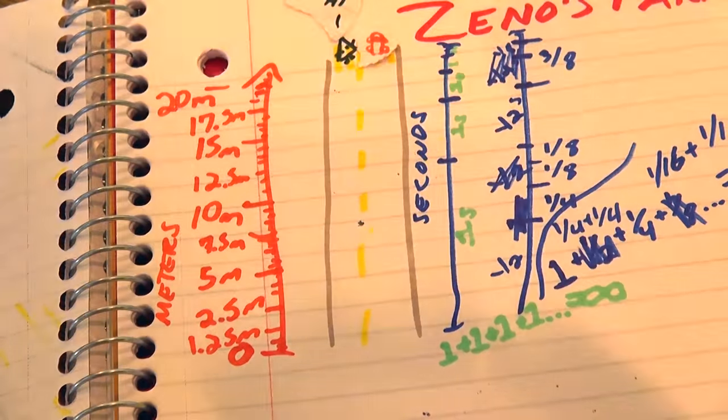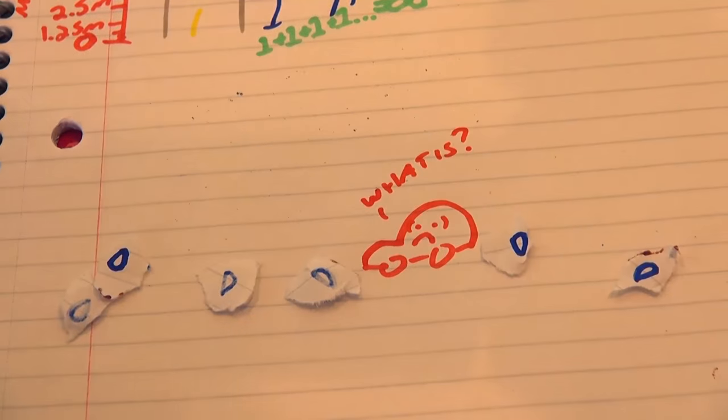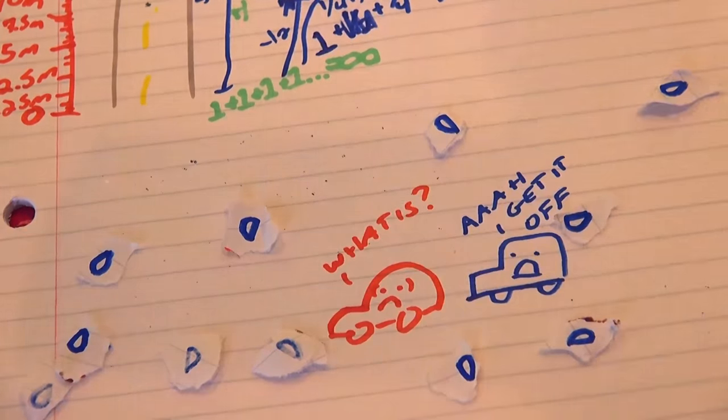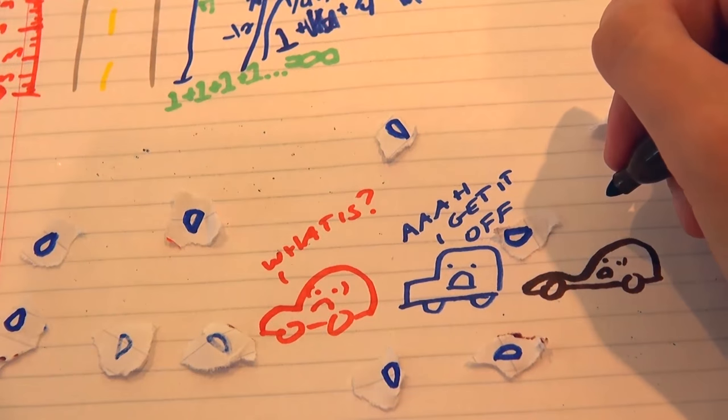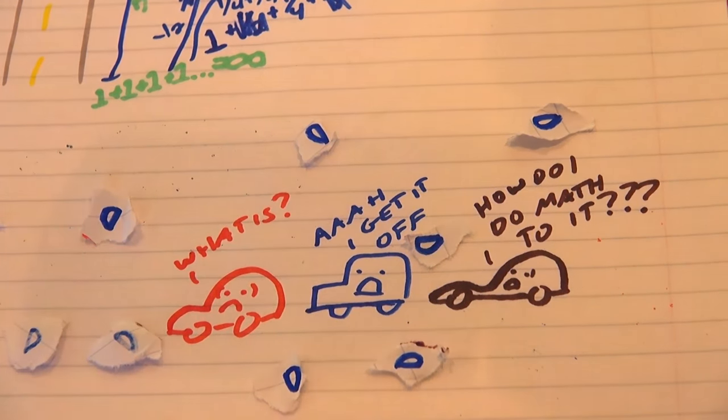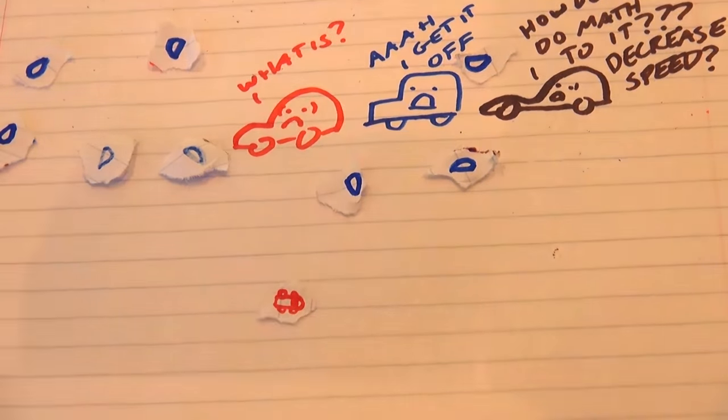There's a stereotype about California drivers that whenever it rains, which is rarely enough these days, traffic stops because all the drivers are freaking out like, what is this substance all over the ground? We don't know how to do math to it. The common wisdom seems to be that when it rains you should just drive slower, a classic error of calculus, because it's not really the speed that's the problem with rain, but how it affects acceleration.